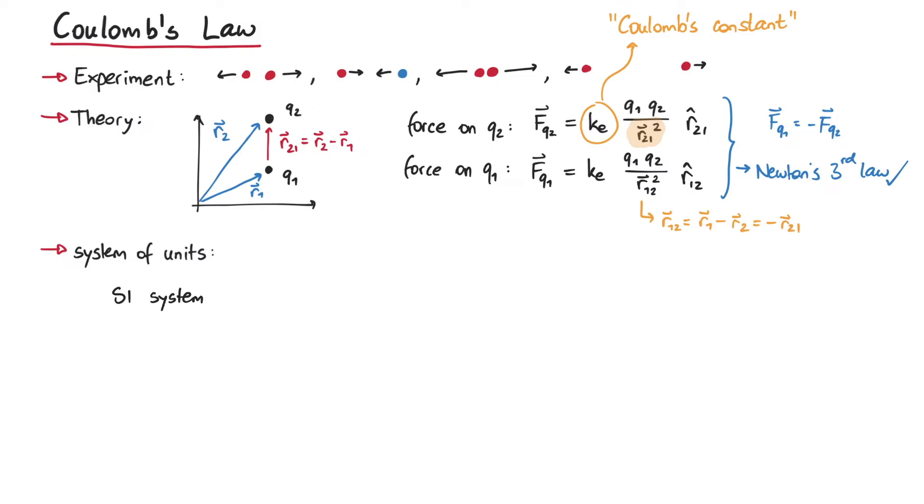First, in the SI system, ke is equal to 1 over 4 pi times epsilon zero. This epsilon zero is called vacuum permittivity, or electric constant, and is given by this numerical value. In summary, when using SI units, the force is given in newtons, the charges in coulombs, the distance in meters, and the vacuum permittivity has units coulomb squared over newton meter squared.